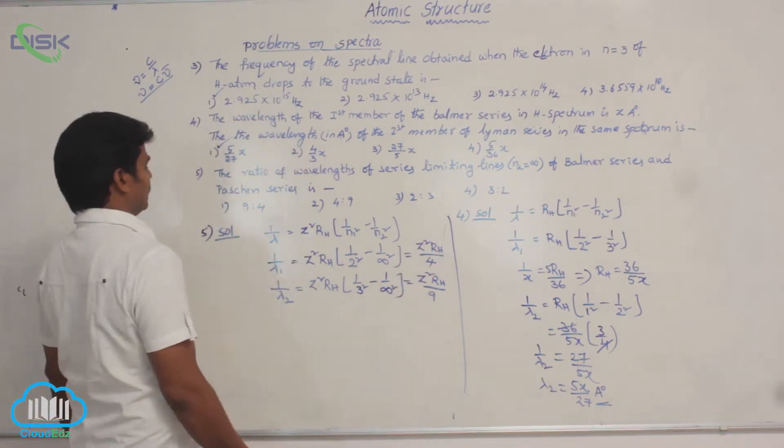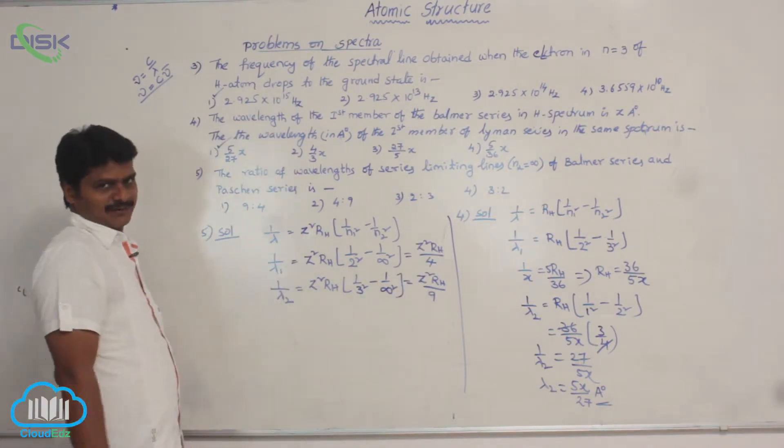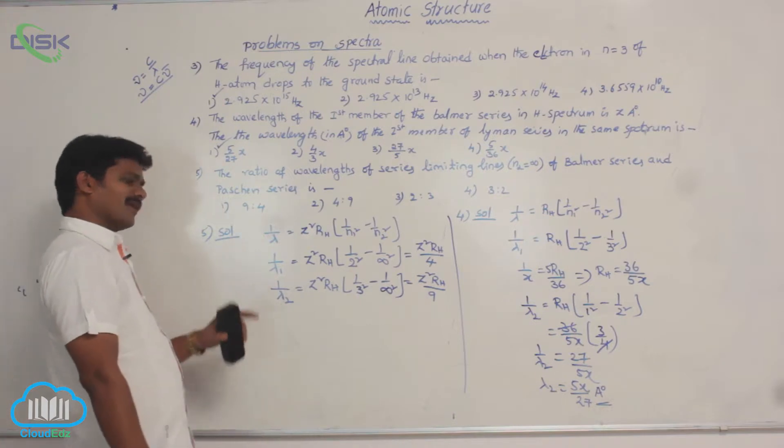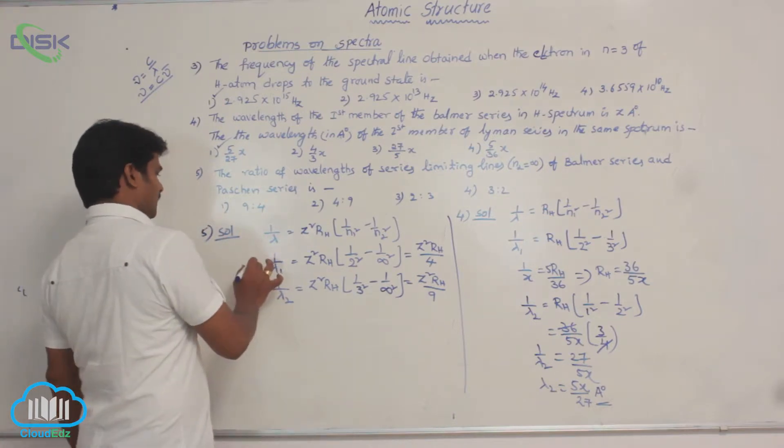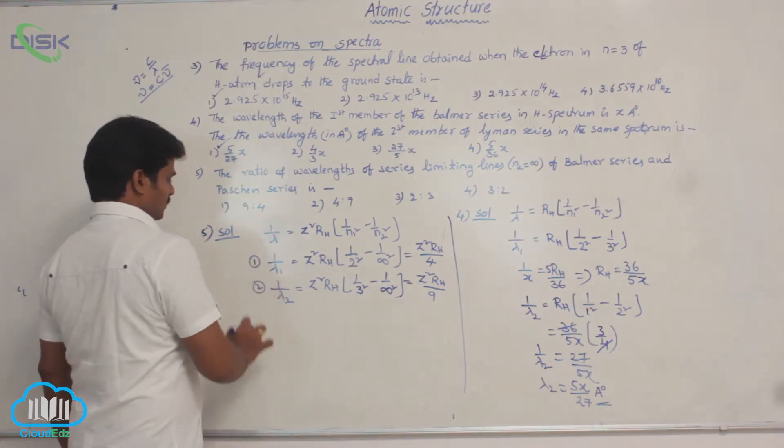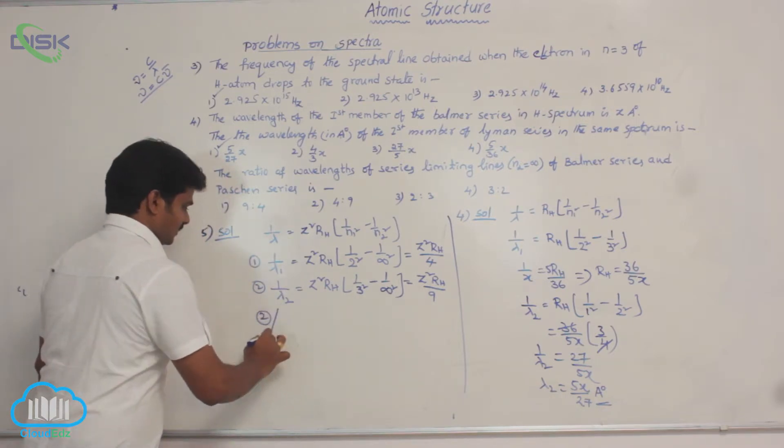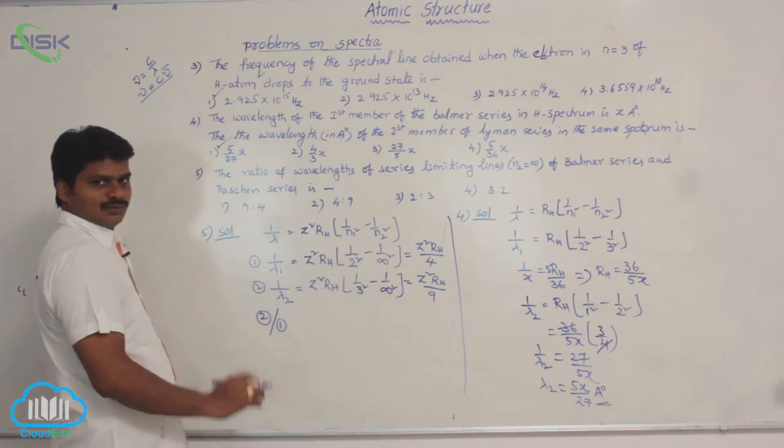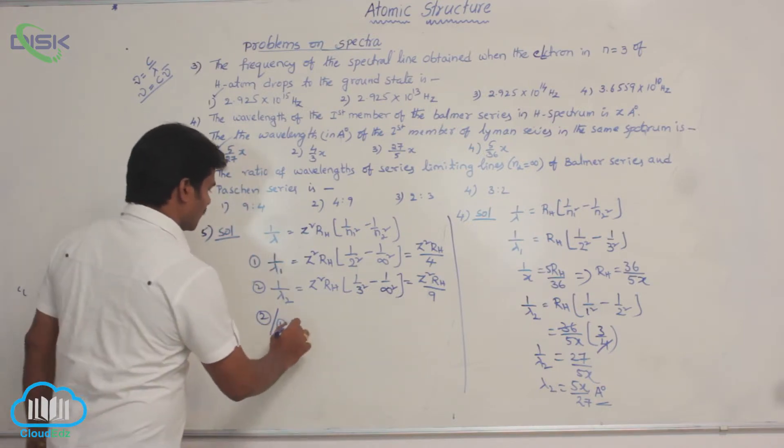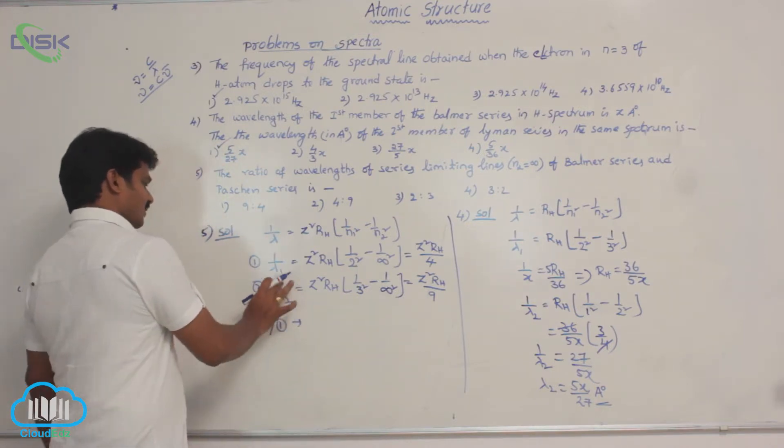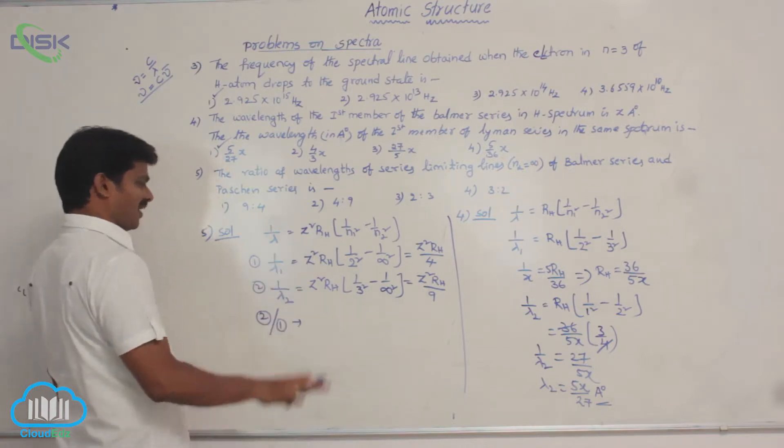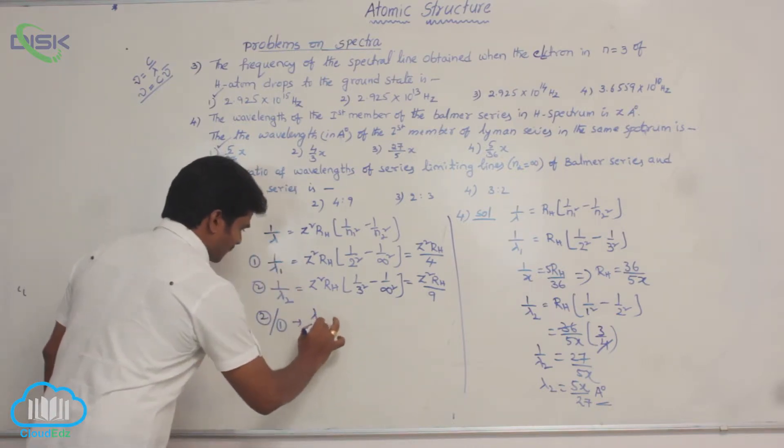But you are asked for lambda 1 by lambda 2. How to get lambda 1 by lambda 2? Let it be 1, it be 2. So for that, 2 by 1, let us do 2 by 1. 2 by 1 means 1 by lambda 2 by 1 by lambda 1. That means lambda 1 by lambda 2.